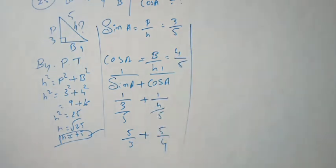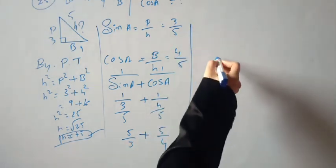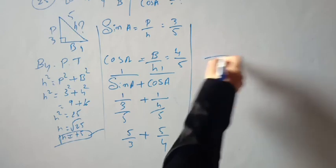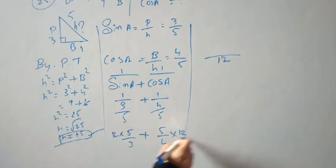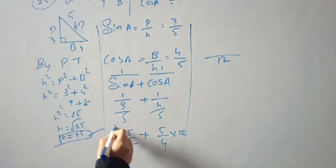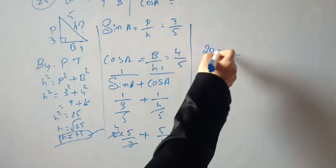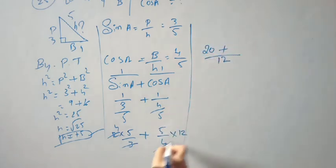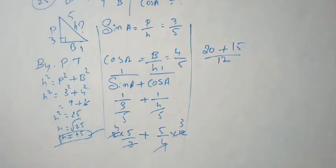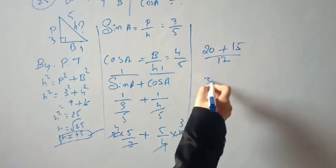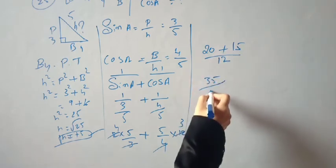LCM is 12. So (5×4)/(12) + (5×3)/(12) = 20/12 + 15/12 = 35/12. Therefore 1/sin A + 1/cos A = 35/12.